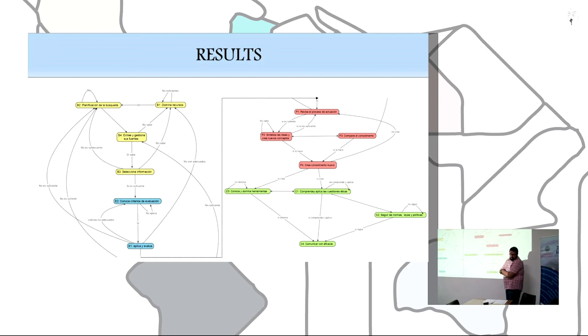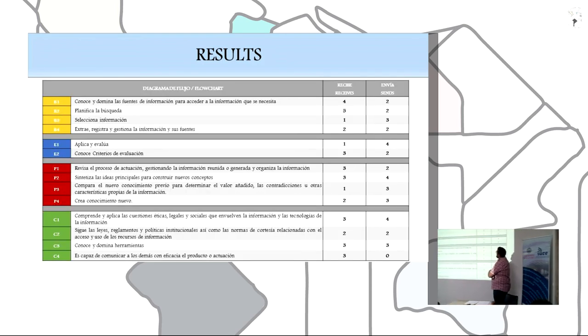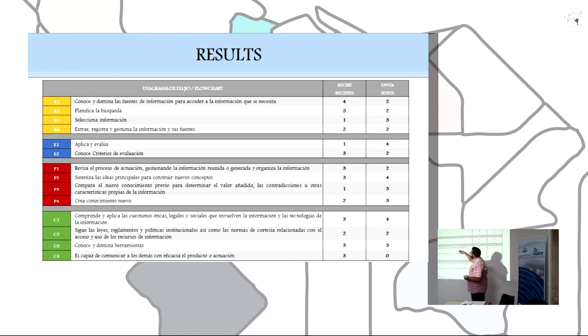In the third phase, we make a flowchart with the principal nodes. We can see the relationship between the dimensions and the learning results. This table is the result of the flowchart. The highest is B2.